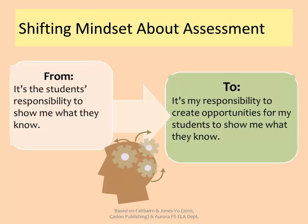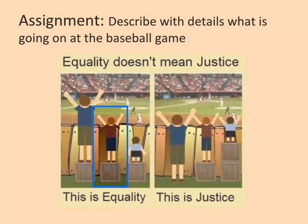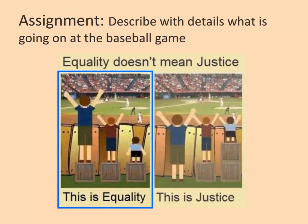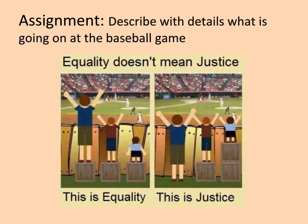By addressing the language demand of instruction, teachers can create opportunities for every student to demonstrate their learning. This image captures the essence of proficiency level differentiation. Imagine that the three students in the picture have been given the assignment: describe what's going on at the baseball game using at least five details. Think of the tallest student as representing a fluent English speaker, the middle student as someone at an intermediate level, and the shortest student as a beginner. In the picture on the left, they each have been provided with the same support — in essence, no differentiation. In the picture on the right, the support given to each student has been differentiated according to their needs, and they all have a greater likelihood of being able to complete the assignment.